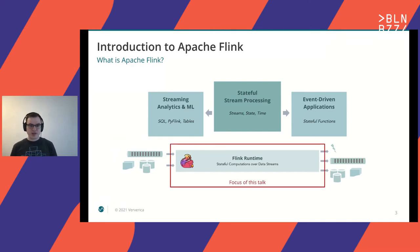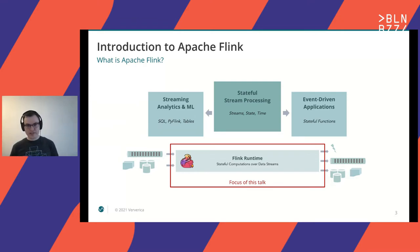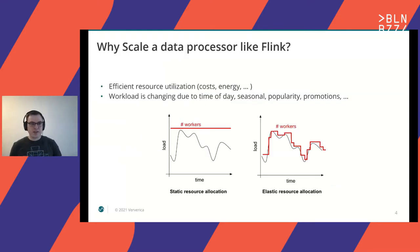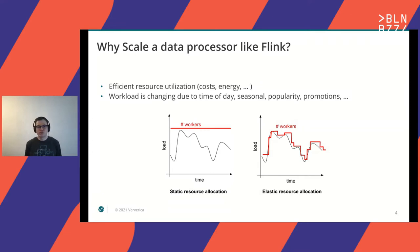This talk is going to focus more on the lower level stuff around the Flink runtime, and everything I talk about today is supported through all the abstractions of Flink. So why would you want to scale a data processor like Flink? The main motivation is efficient resource utilization — you want to reduce your costs, reduce your energy consumption, and not waste resources.